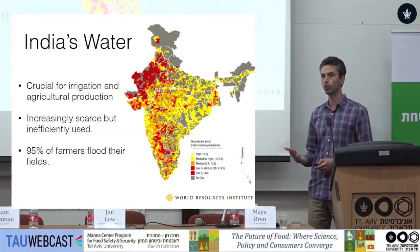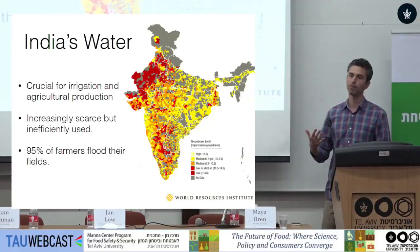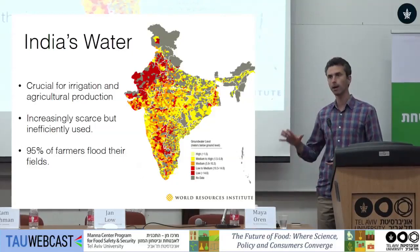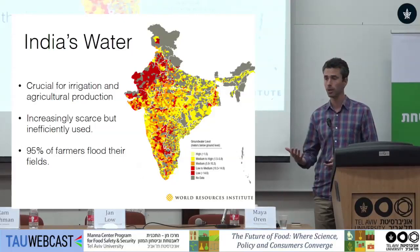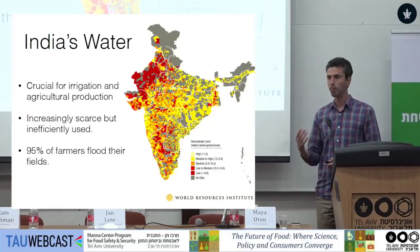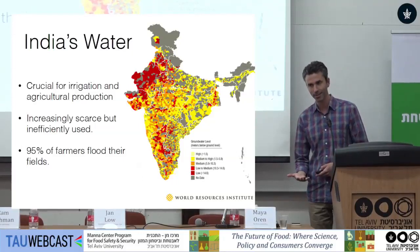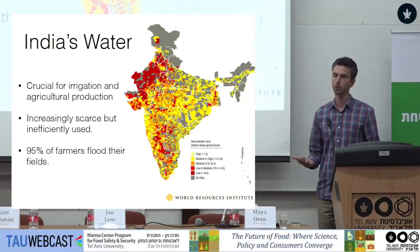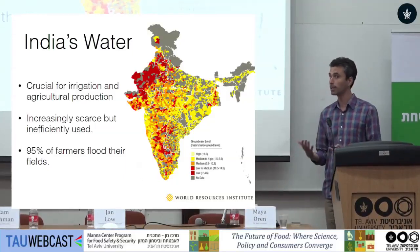I want to start with India, a country which is obviously very important in the global picture, but facing a tremendous water challenge. In India, groundwater especially is becoming increasingly scarce. If you go to farmers anywhere in India, the number one complaint is we're lacking water. But the paradox is that even though water is very scarce and becoming increasingly so, it's being used extremely inefficiently. The great majority of Indian farmers still flood their fields, which is technically a very inefficient way to use water. So it's scarce but inefficiently used.